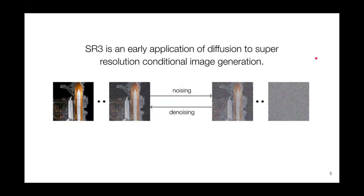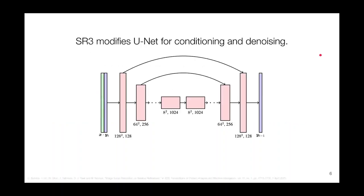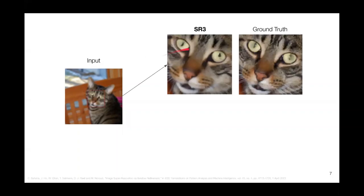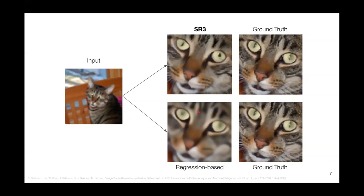The authors of this paper decided to apply diffusion to super resolution by treating it as a conditional image generation task. This means that instead of conditioning on an input label, they condition on a low resolution input image. Specifically, the authors modified the U-Net architecture, as it is well suited for varying scales of resolution, which is required for super resolution. Here you can see a low resolution input image, and if we put it through the SR3 process, we can see how closely it matches the ground truth. Compared to regression-based methods, all the detail lost in regression — like whiskers and pupils — is recovered in SR3, whereas that information is blurred out in the regression-based approach.